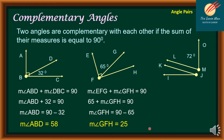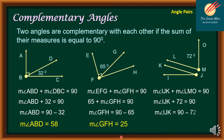We can still consider angles complementary if the sum is equal to 90 degrees, even if they are separate figures. For example, the measure of angle IJK plus the measure of angle LMO equals 90 degrees, provided they are complementary. Solving: IJK plus 72 equals 90. Subtracting both sides by 72, the measure of angle IJK equals 18 degrees.